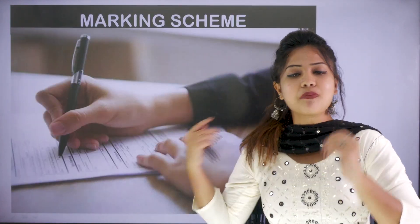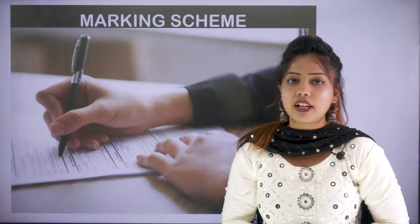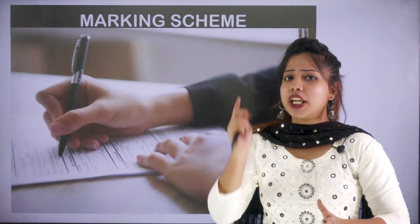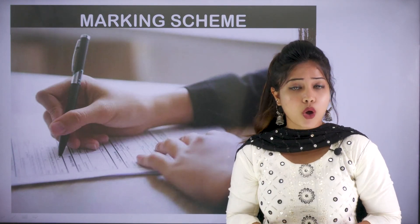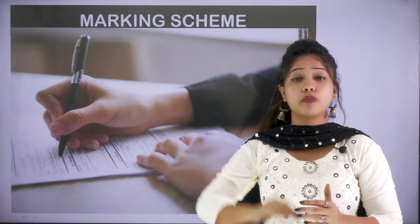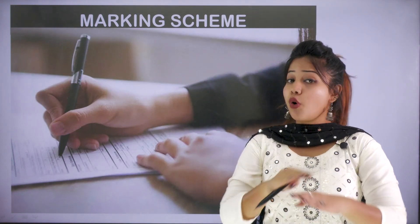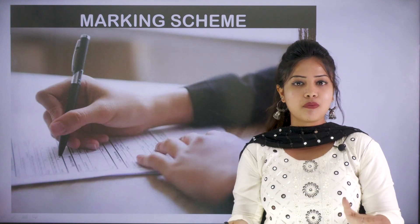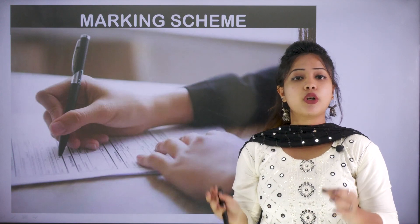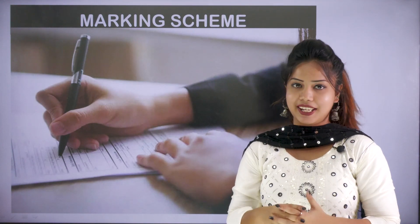Looking at the marking scheme of CUET PG: every question carries four marks and you get four marks for every correct answer. If you mark a wrong option, there will be negative marking — minus one mark will be deducted from your total. No marks will be reduced if you haven't marked any option. Students, make sure about the answer; if you are unsure, kindly ignore it or else the negative marking will apply.